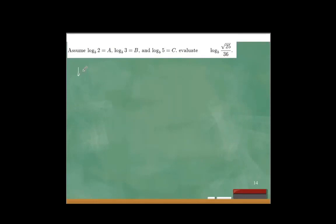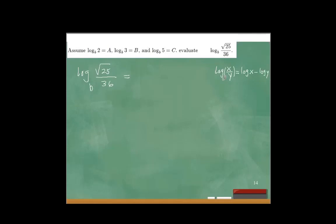Let's write this down. We have log base B of the square root of 25 over 36. The first thing I want to do is expand this. Recall the property: if the argument is a quotient, log(x/y) = log x minus log y with the same base B. So I'm going to write this as log base B of the square root of 25 minus log base B of 36.